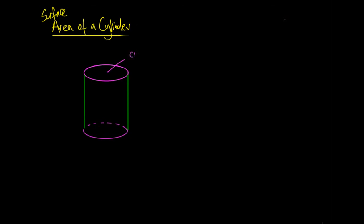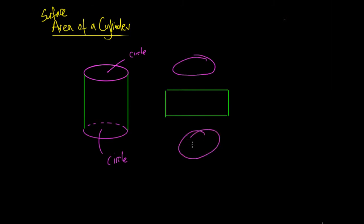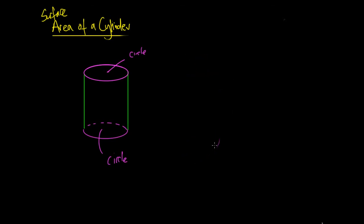We're going to have the top which is a circle, we're going to have the bottom which is another circle, and then we're going to have this region in the middle here which if we were to flatten it out it would look like a rectangle. So you can see that if we were to take this rectangle and two circles and put them all together we could make this cylinder.